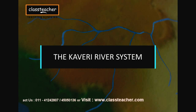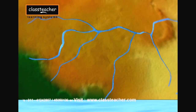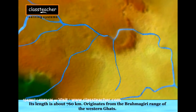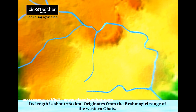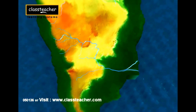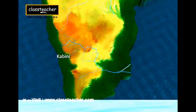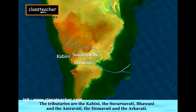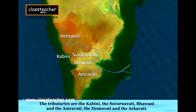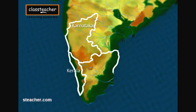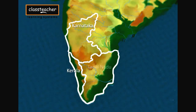The Kaveri rises in the Brahmagiri range of the Western Ghats, flows for about 760 km, and reaches the Bay of Bengal. It is joined by the Kabini, the Suvarnavati, Bhavani and Amravati, the Hemvati, and Arkvati. The Kaveri Basin covers parts of Karnataka, Kerala, and Tamil Nadu.